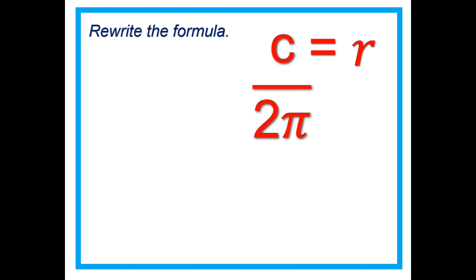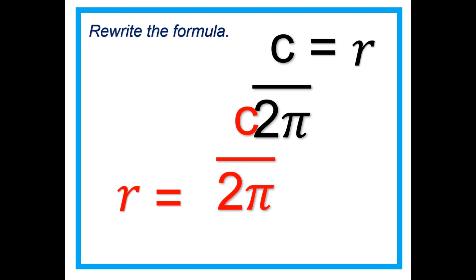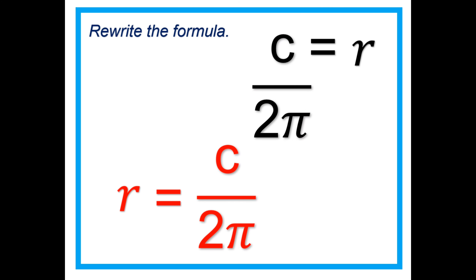We rewrite the formula. Just like this: r equals C divided by 2π. That's it.